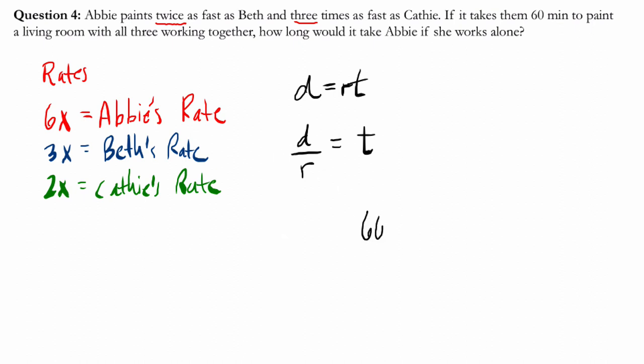Let me plug that in. 60 minutes to complete one room, and then we have their combined rates. They're working together, so if we put their rates together, we know they can accomplish this task in 60 minutes. So it would be 6x plus 3x plus 2x, that's their combined rates. And that gives us 1 over 11x equals 60.